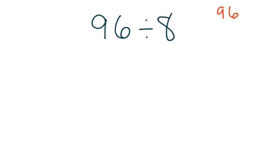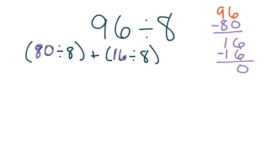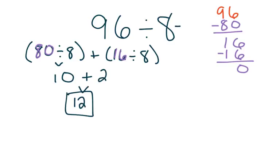I'm going to think about my 8 facts, and I know that 8 goes into 80 evenly, so I'm going to pull 80 out — 80 divided by 8 — and subtract it from my whole, which leaves me with 16 left. I know that fact as well: 16 divided by 8, that's a pretty easy fact. So I'm going to subtract my 16 from my whole and I'm left with 0. All I need to do is find these two quotients and add them together. 8 goes into 80 ten times, 8 goes into 16 two times, and 10 plus 2 gives me 12. That is my quotient.